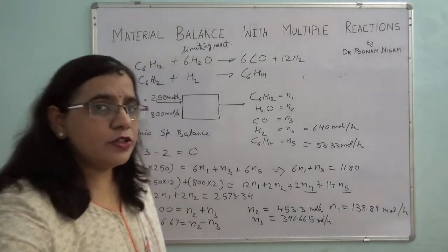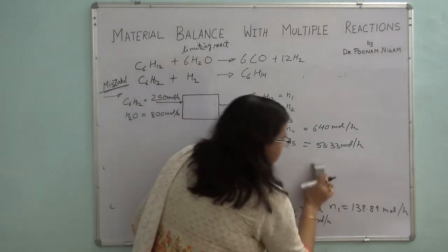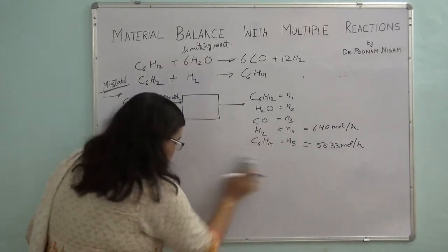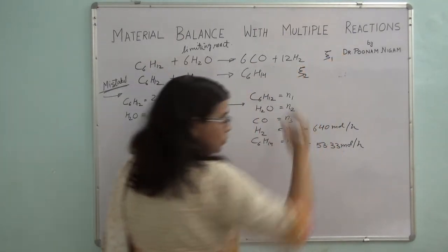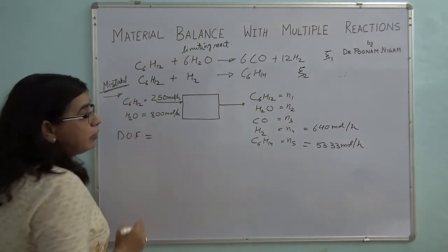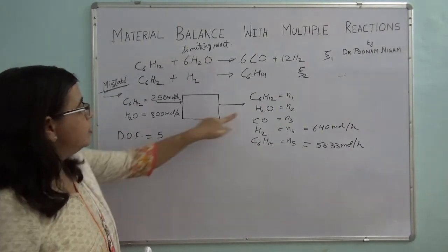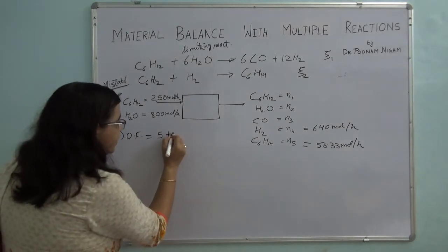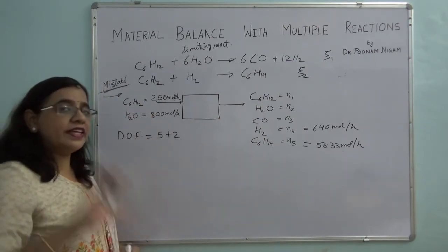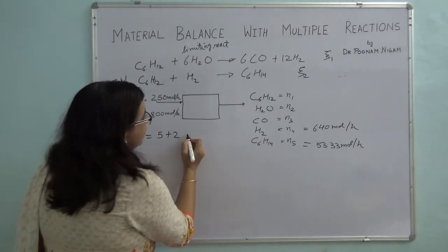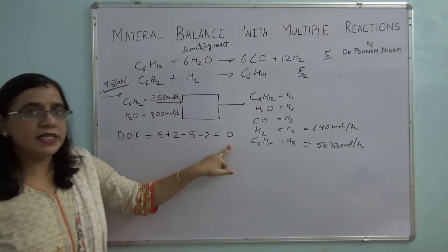Now let's use the extent of reaction method. There are two reactions, so I define two extents of reaction: zeta 1 and zeta 2. For the degree of freedom: 5 unknowns plus 2 zeta values gives 7 unknowns total. I can write 5 independent molecular species balances, minus 2 process specifications, giving zero. The problem is solvable.